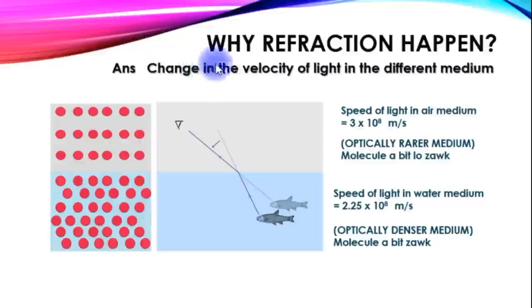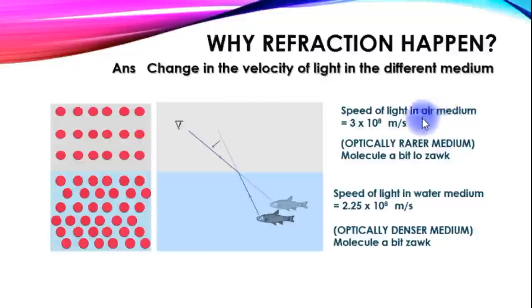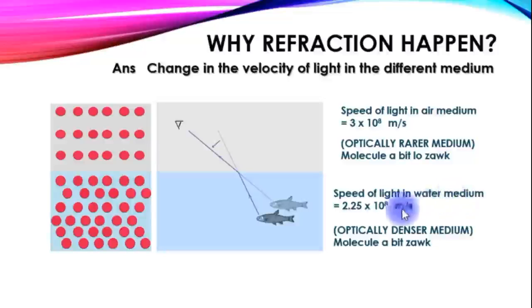The answer would be the change in the velocity of light in different mediums. Light velocity in air medium is 3×10⁸ m/s, and in water it is 2.25×10⁸ m/s.